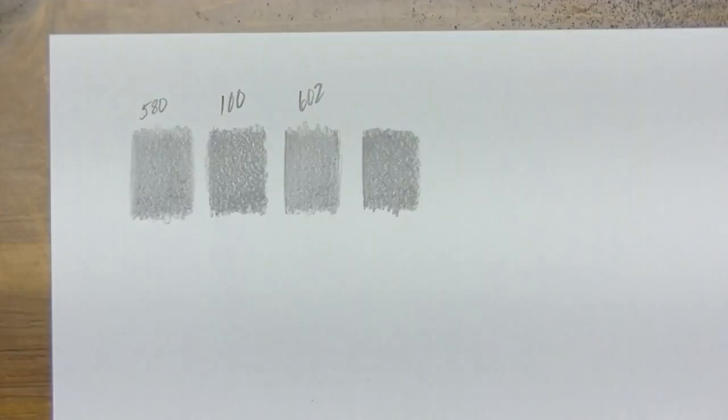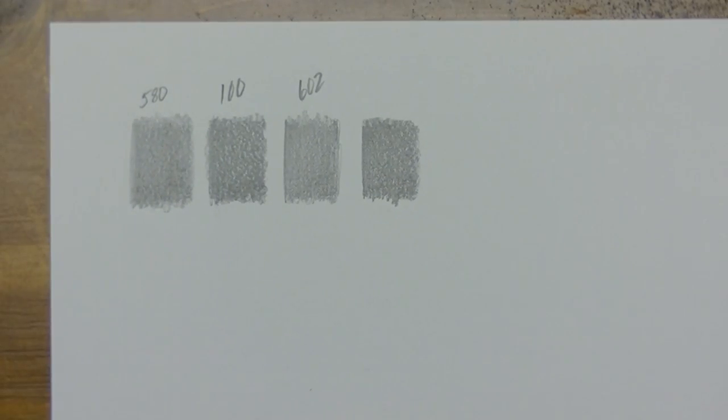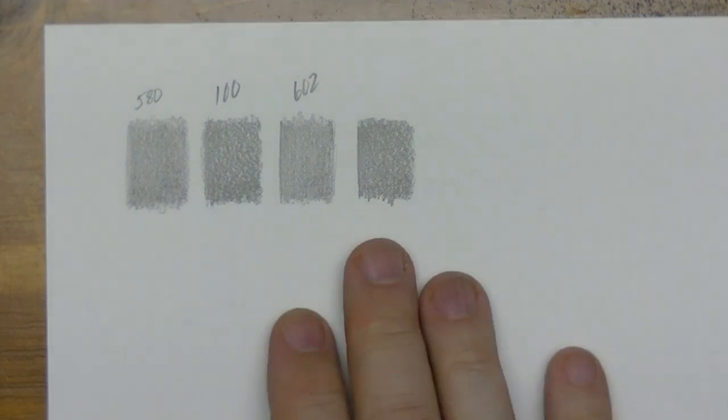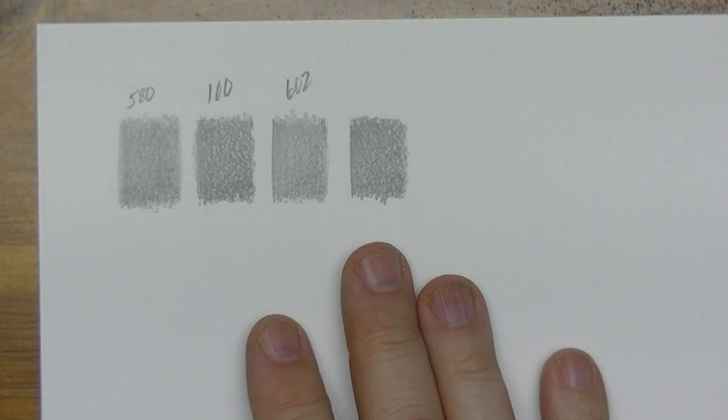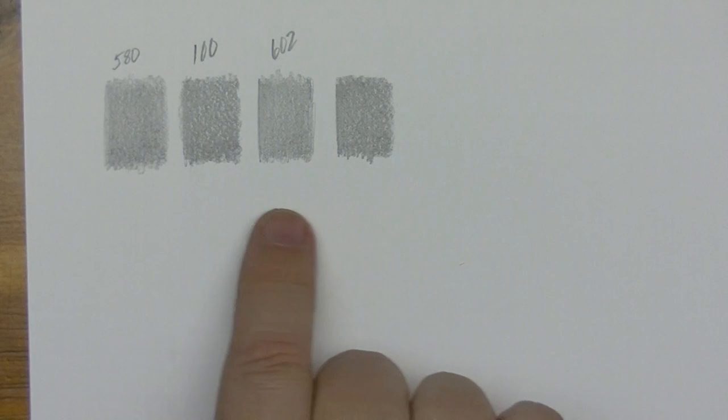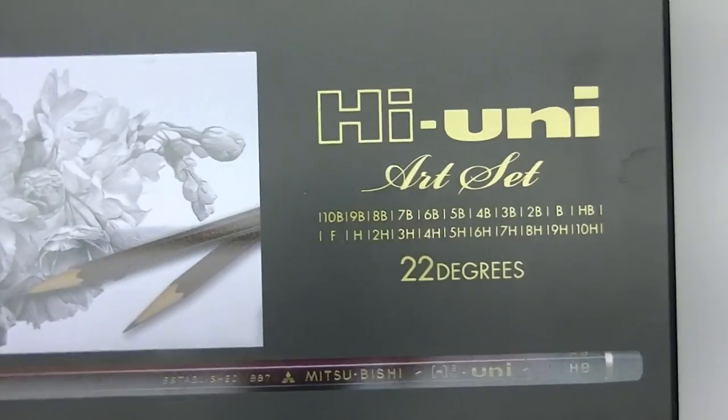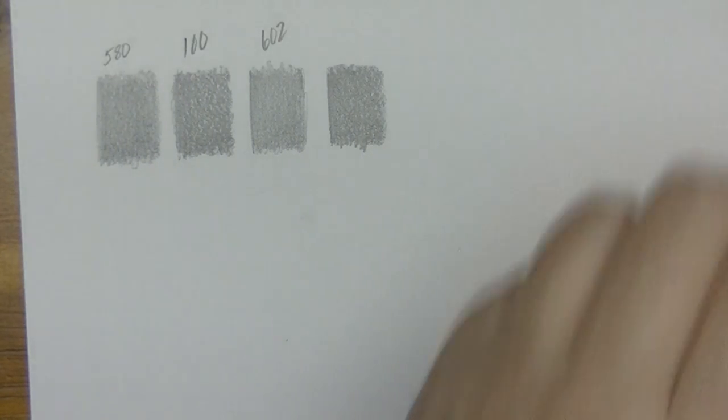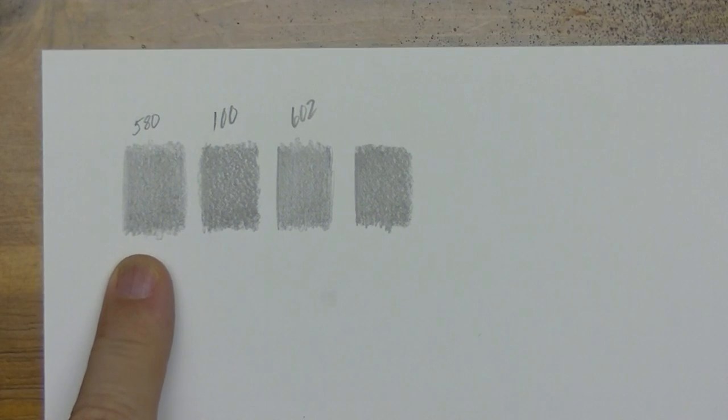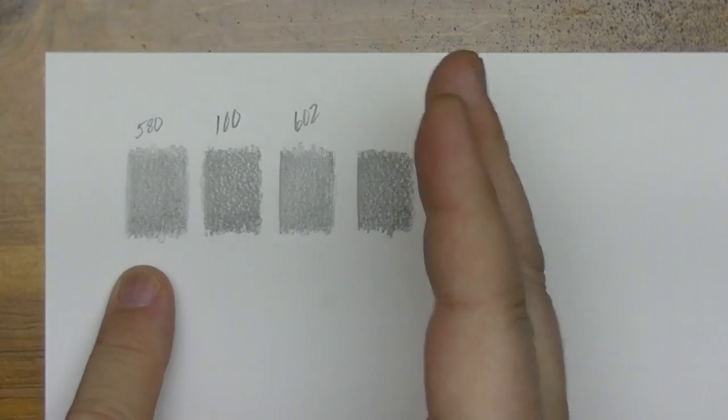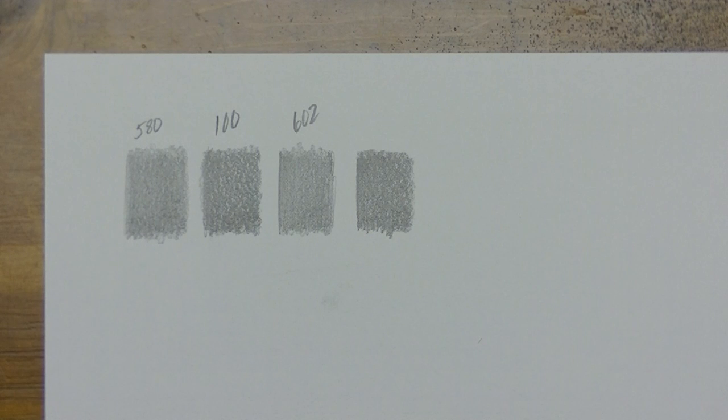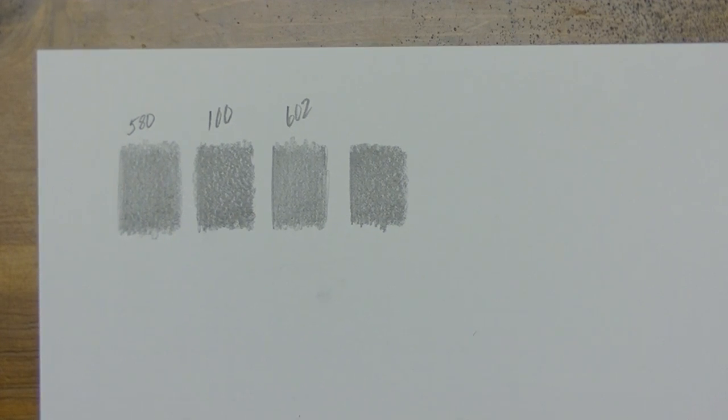That's something graphite has a tendency to do that. Okay now that we have this down, what I'm going to do is get an idea of what grades these would be using the Mitsubishi Hi-Uni art set here which I call my MB testing set. And we're going to find out where this 580 falls in as far as the drawing pencil grades.